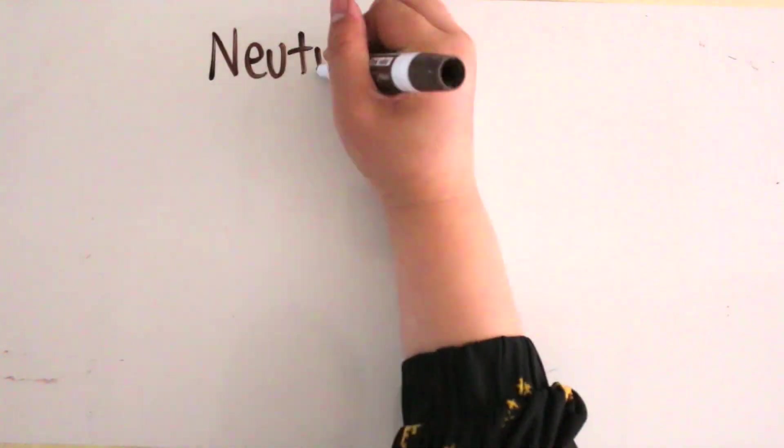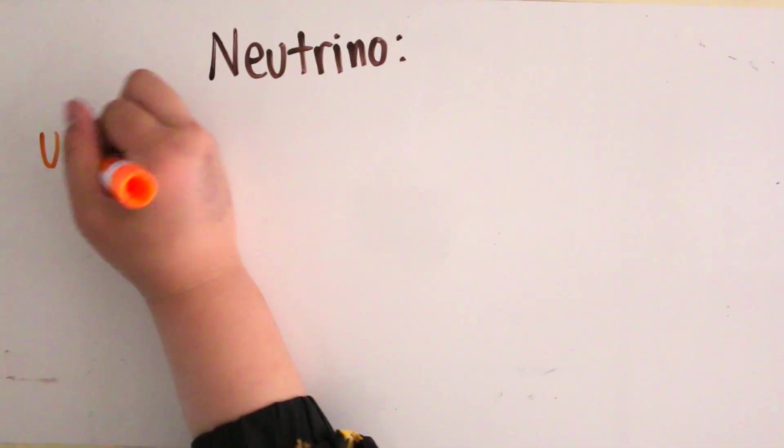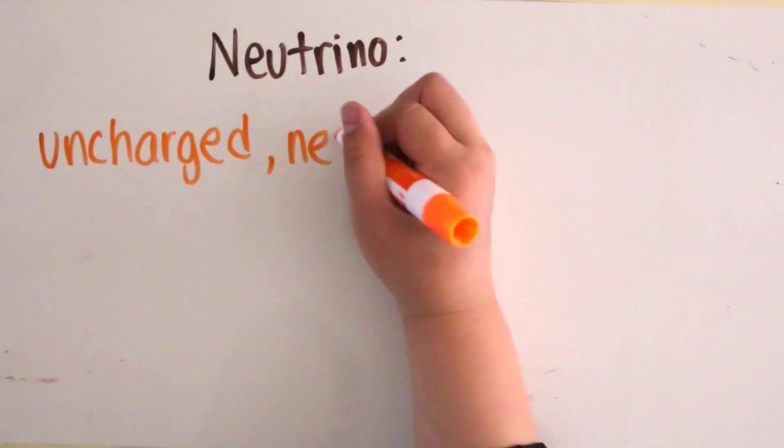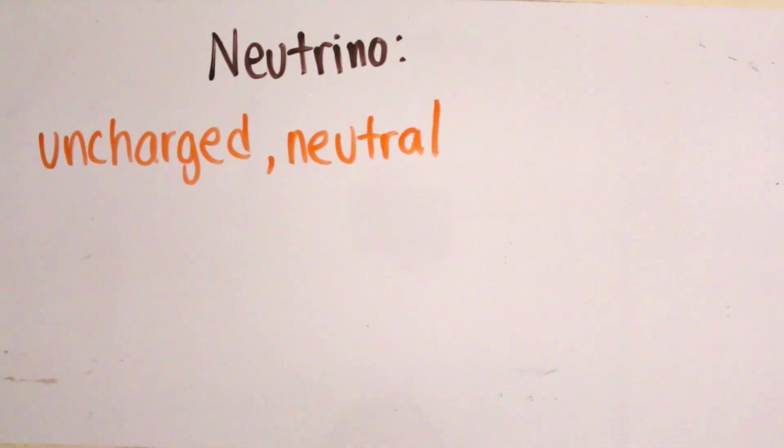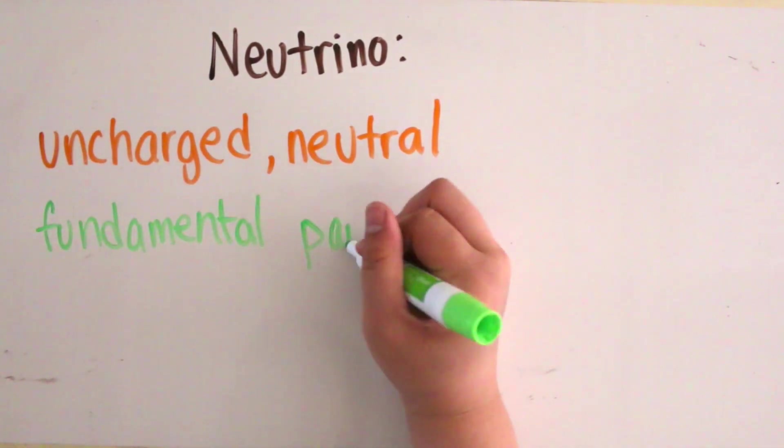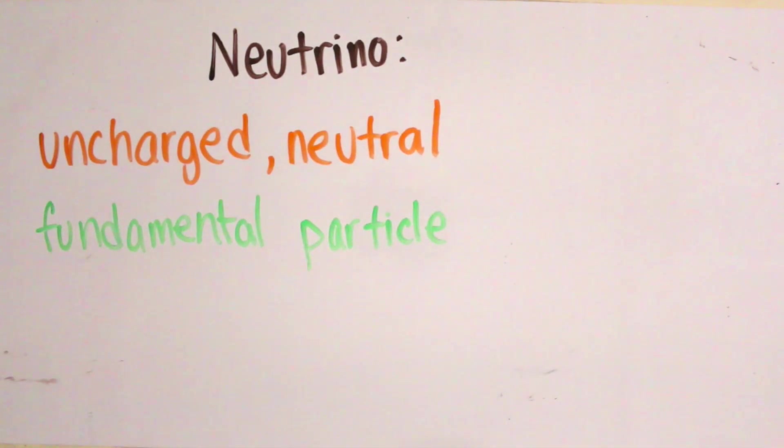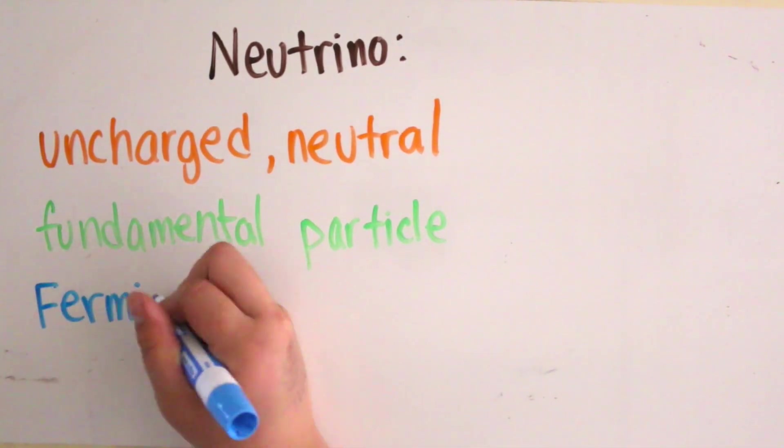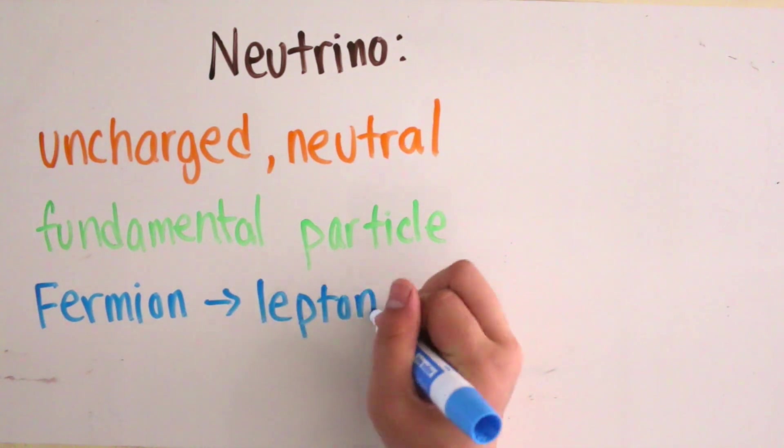Let's first define the neutrino. It is an uncharged particle, hence the name neutrino, meaning little neutral one. It is a fundamental particle, meaning it is not made up of any smaller parts. The neutrino is classified as a fermion, specifically a lepton in the standard model.